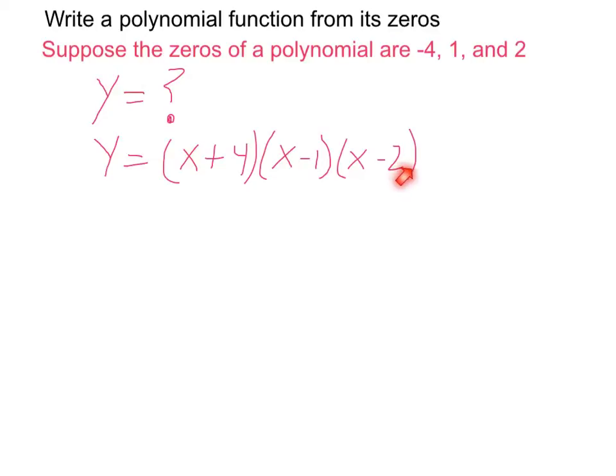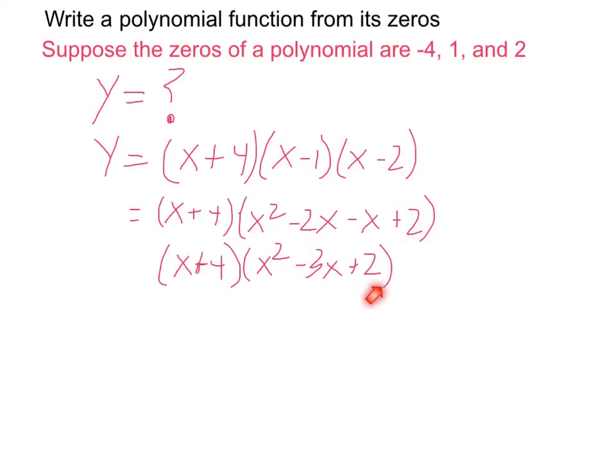Now if I wanted to write this in standard form, I'd have to manipulate this by multiplying together these binomial terms to get the full polynomial in standard form. If I FOIL these two terms, I get this, which can be simplified to this.